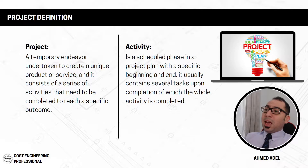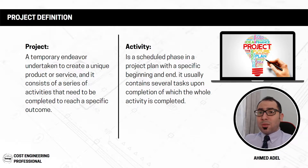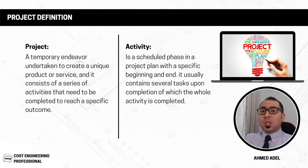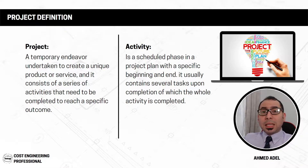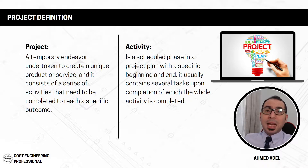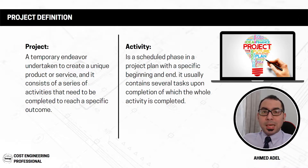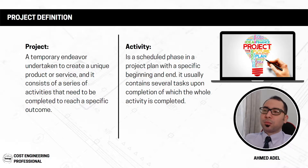An activity is a scheduled phase in a project with a specific beginning and end. It usually contains several tasks, upon completion of which the whole activity is completed. So an activity is part of the project, the activity consists of smaller tasks, and if you finish those tasks you finish the activity. Let me give you a small example — let's say we have an activity called 'formwork for first floor slab.'